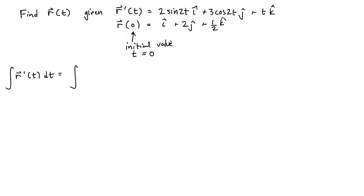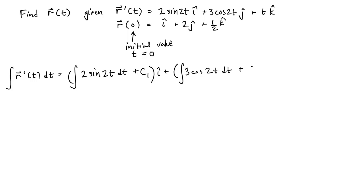In this case, it'll be the antiderivative of the x component of our vector function, plus a constant of integration corresponding to that antiderivative of the x component, plus the antiderivative of the y component of our vector function. It will have its own constant of integration, plus the antiderivative of the z component of our vector function, with its own constant of integration.